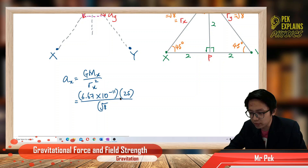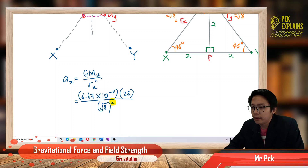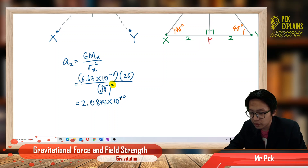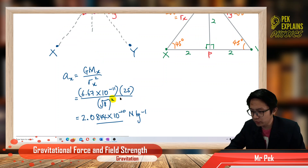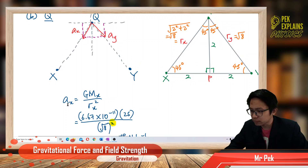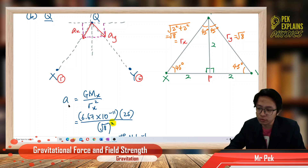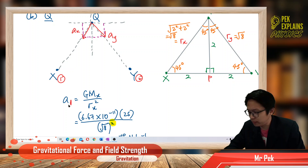We can now find A1 since we have the distance. The R is √8, but don't forget to square it — many students forget to square that. A1 equals G times M1 over R1 squared: 6.67×10⁻¹¹ times 25 kilogram over (√8) squared. The answer for A1 is 2.0844×10⁻¹⁰ newton per kilogram.